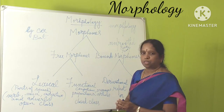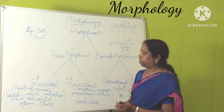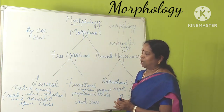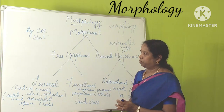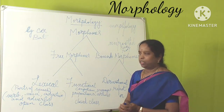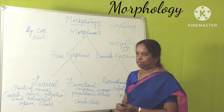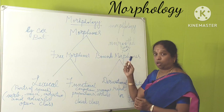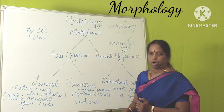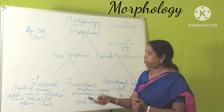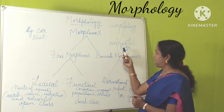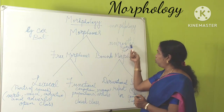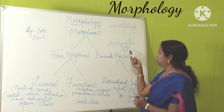Morphemes are of two types: free morphemes and bound morphemes. Free morphemes are words which can stand on their own to give meaning — for example, car, bad, ball, dog — anything which gives meaning without depending upon another word. Likewise, a bound morpheme is a word which cannot stand on its own to give meaning, so it has to depend upon another word.